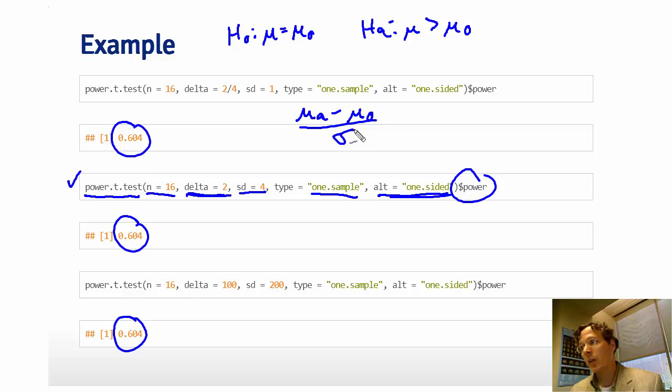So here, I specify my delta as 0.5, and give it a standard deviation of 1, and notice, so if I'm defining this numerator as delta, notice this is the same effect size as in this case right here.